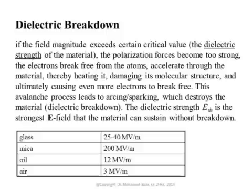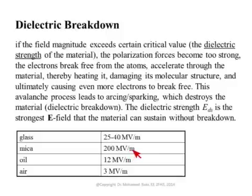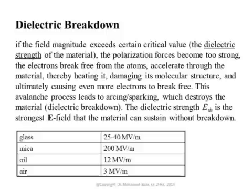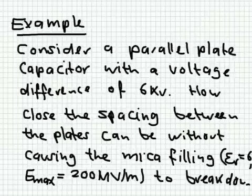For different materials, we have a maximum possible electric field before the material breaks down. Glass can withstand up to 40 megavolts per meter; after that, glass becomes a conductor. Mica can stand up to 100 megavolts per meter, oil up to 12 megavolts per meter, and air up to 3 megavolts per meter. When lightning strikes, this means the electric field exceeded 3 MV/m, causing electrons to break free from their atoms and air to become a conductor.